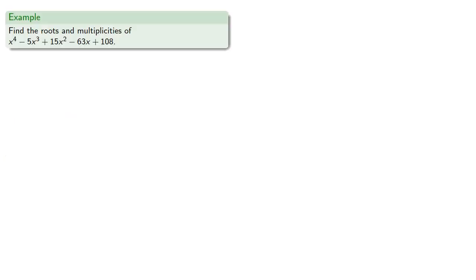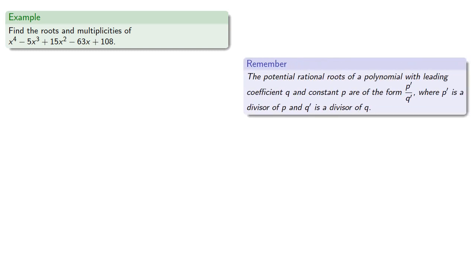So let's find the roots and multiplicities of this horrifying thing. And so here we'll be relying on our rational root theorem. The potential rational roots of a polynomial with leading coefficient q and constant p are of the form p prime divided by q prime, where p prime is a divisor of our constant term, and q prime is a divisor of our leading coefficient.